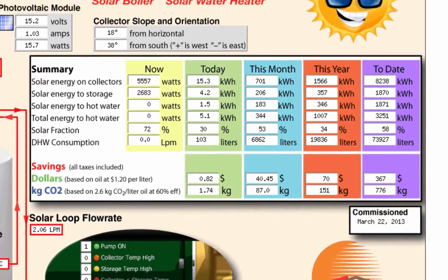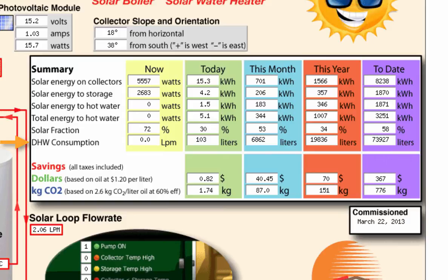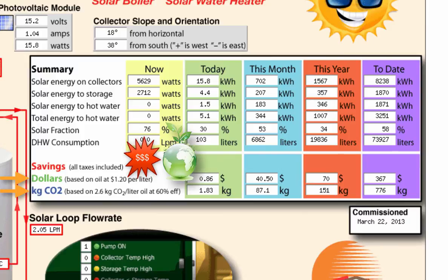The summary table displays current, daily, monthly, and yearly data, including the solar energy on the solar collectors, how much of that energy is delivered to the solar storage tank, how much solar heated water is delivered to the auxiliary water heater, the total energy required to heat your hot water, what percentage of that energy came from your solar system, the total domestic hot water consumed, and money savings and reductions in CO2 emissions based on the solar energy delivered to the solar storage tank.